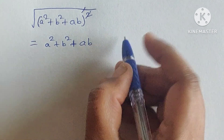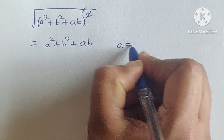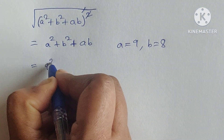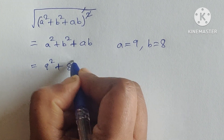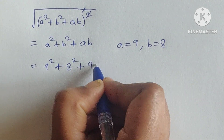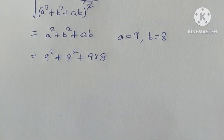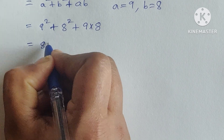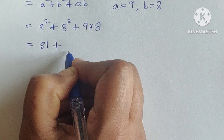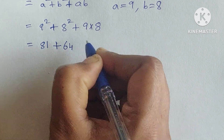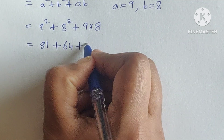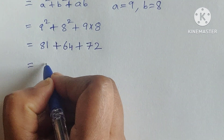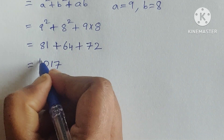Now substituting back a equals 9 and b equals 8: we get 9 squared plus 8 squared plus 9 times 8, which equals 81 plus 64 plus 72, which equals 217. So the answer is 217.